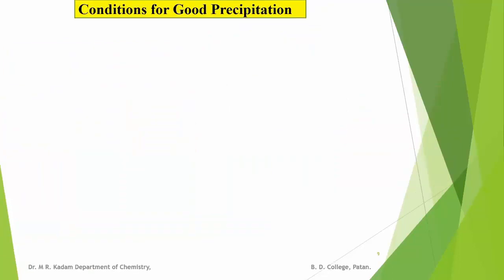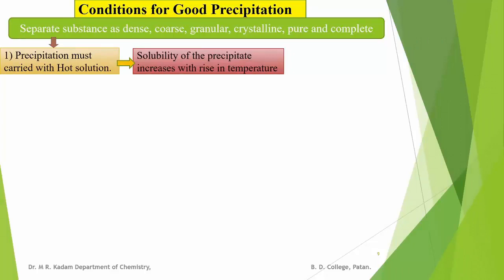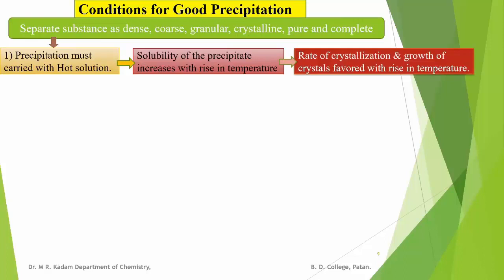Another important point of gravimetric analysis is the conditions for good precipitation. Precipitation is good when the separated substance or precipitated compound is dense, coarse, granular, crystalline, pure, and complete. To achieve these properties, some conditions are maintained. The first condition is that precipitation must be carried out using hot solutions. Solubility of the precipitate increases with rising temperature; hence, the rate of crystallization and growth of crystals is favored with rising temperature.